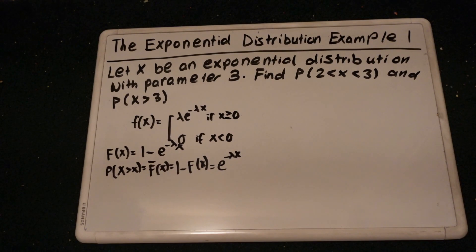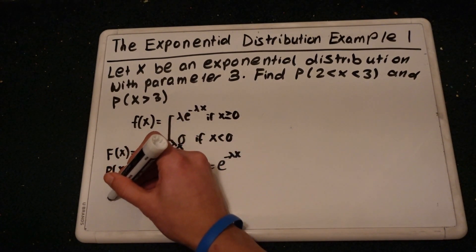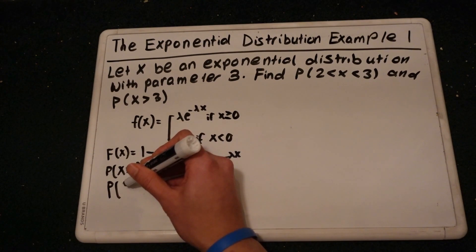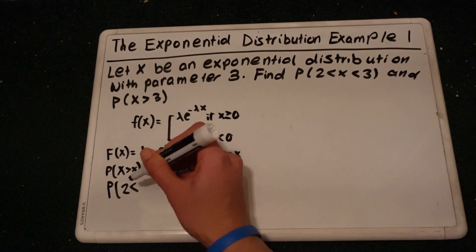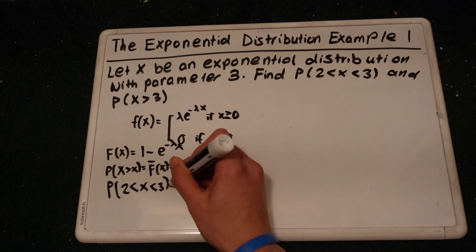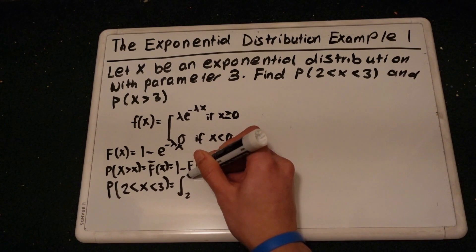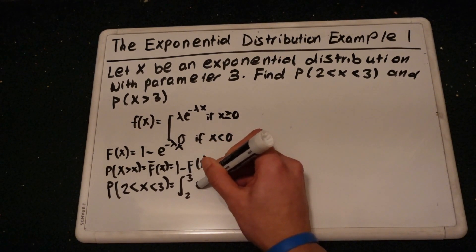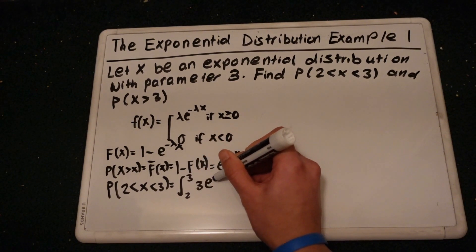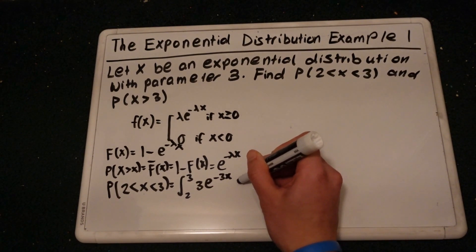So we're trying to figure out the probability that x is between 2 and 3. The probability that x is between 2 and 3 is equal to the integral from 2 to 3 of 3 times e to the negative 3x dx.